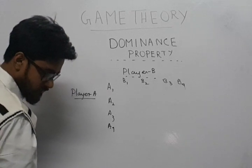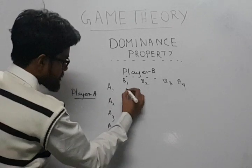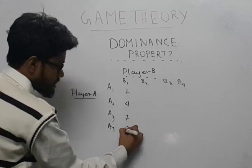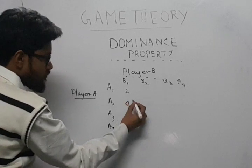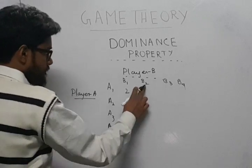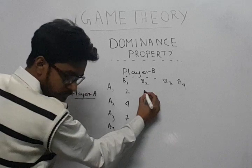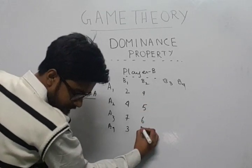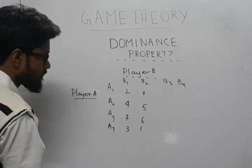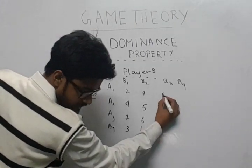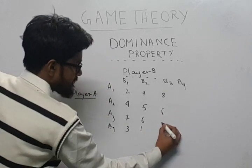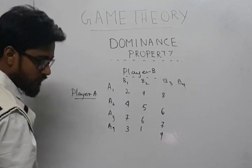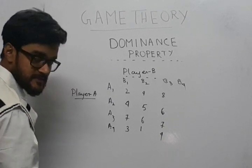Now I'll write down the payoffs which are: 2, 4, 7, 3 for the first row; 4, 5, 6, 1 for the second; 8, 6, 7, 4 for the third; and for B4 the payoffs are given by 5, 7, 6, 2.